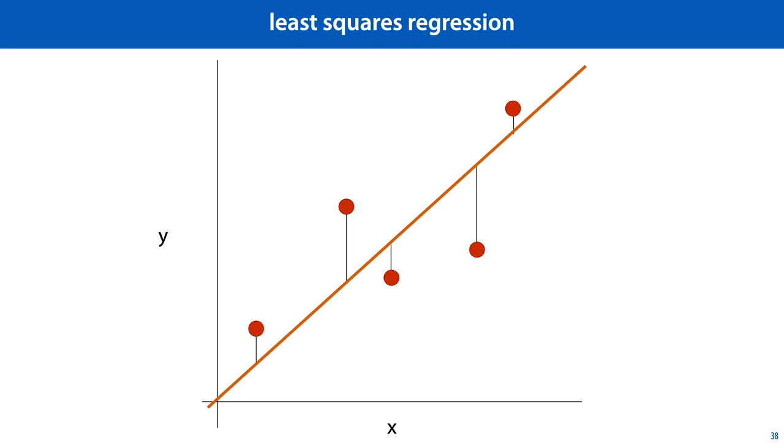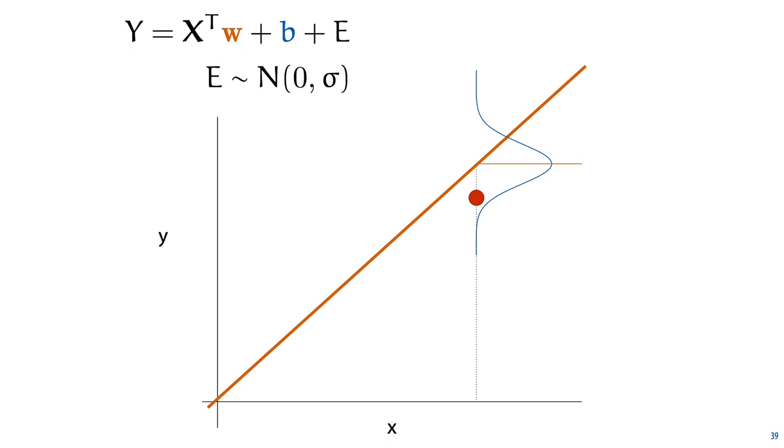Now we first encounter the principle of least squares, not in the context of descriptive statistics like the mean and the standard deviation, but in the context of regression, and you may ask whether this also leads to a normal distribution hiding somewhere in the regression problem. And indeed it does.